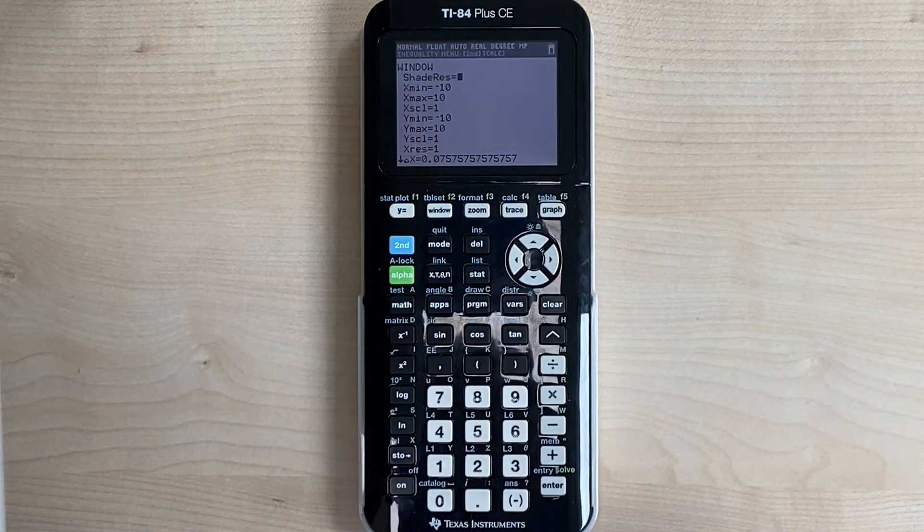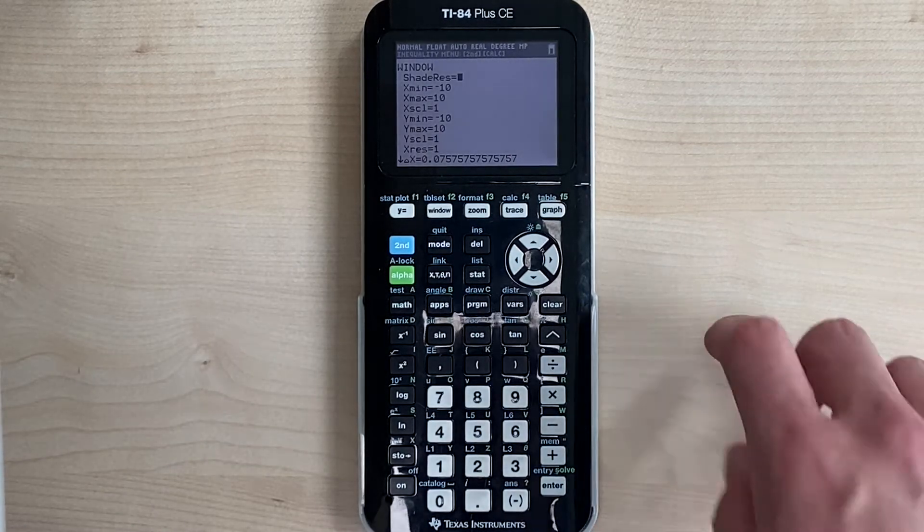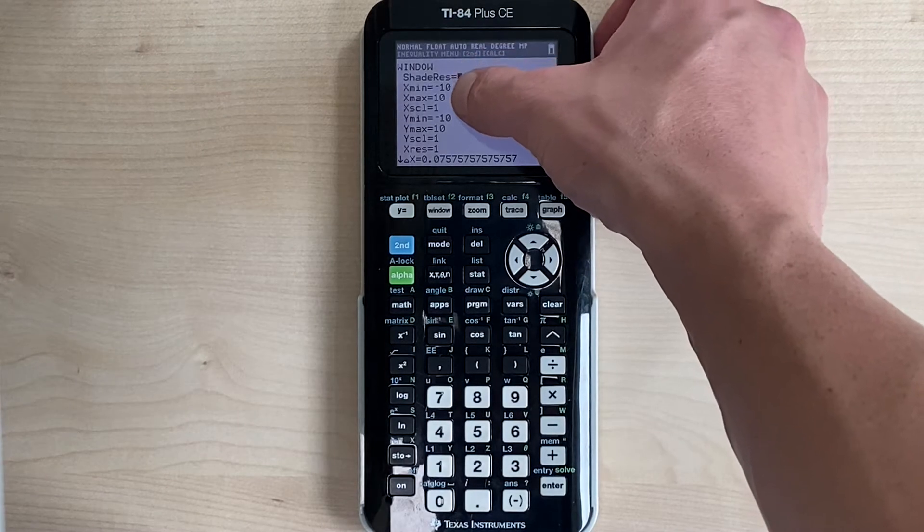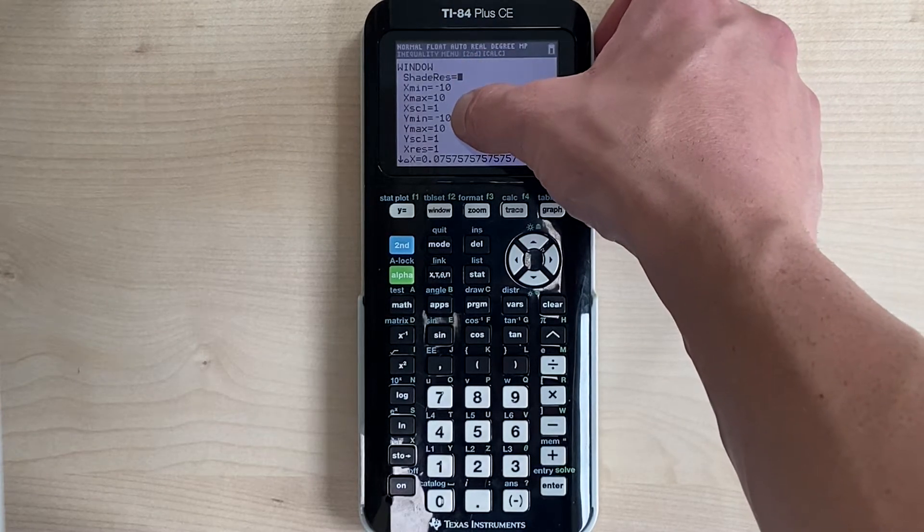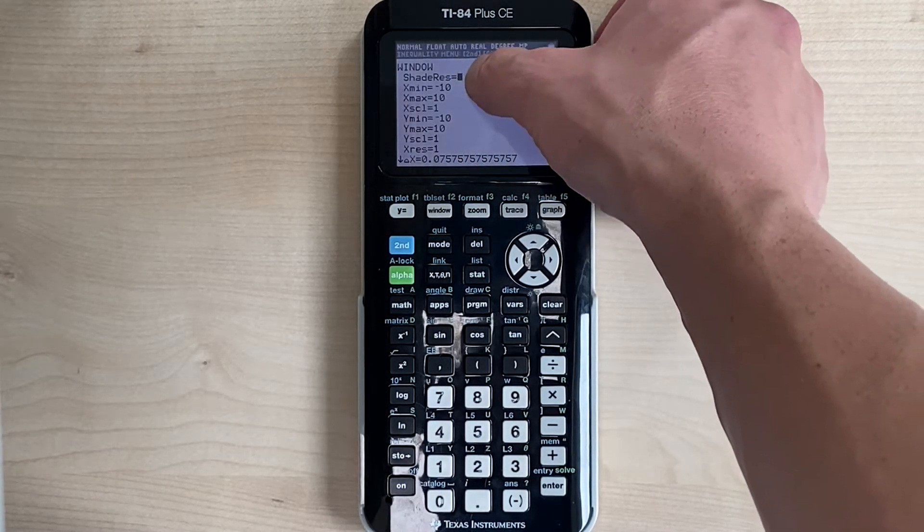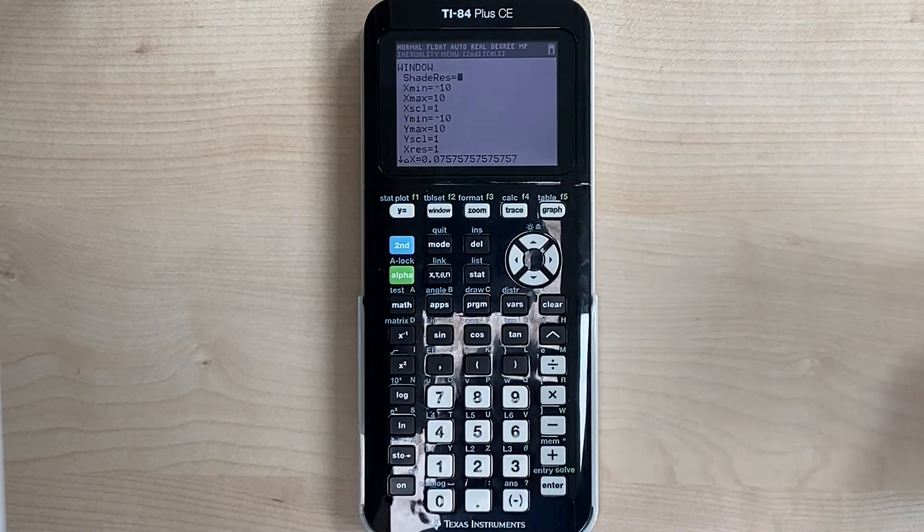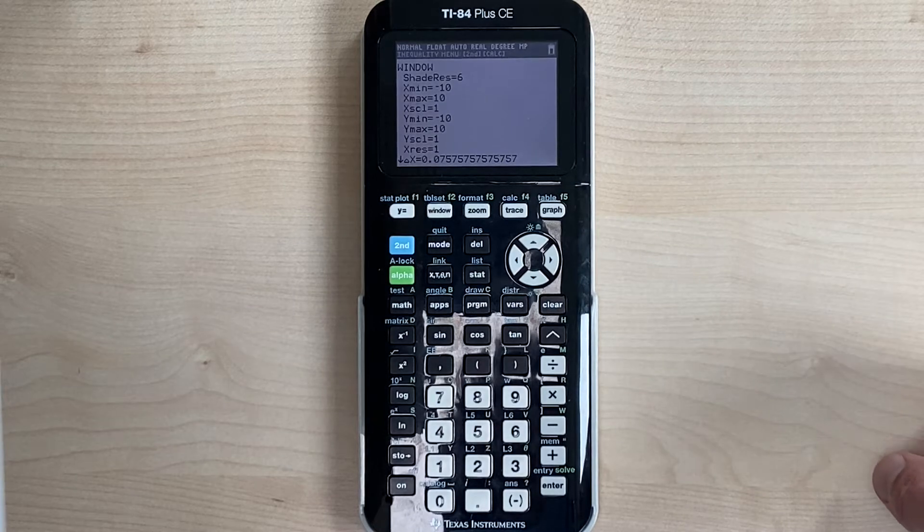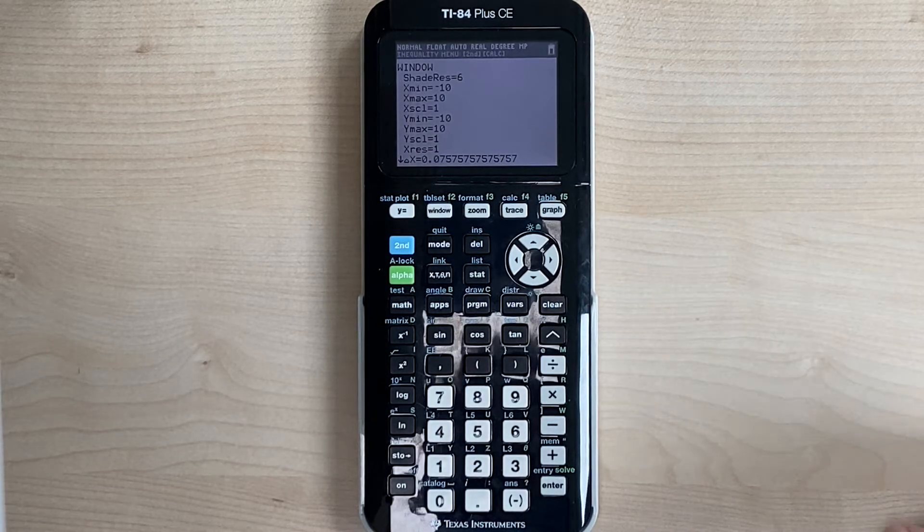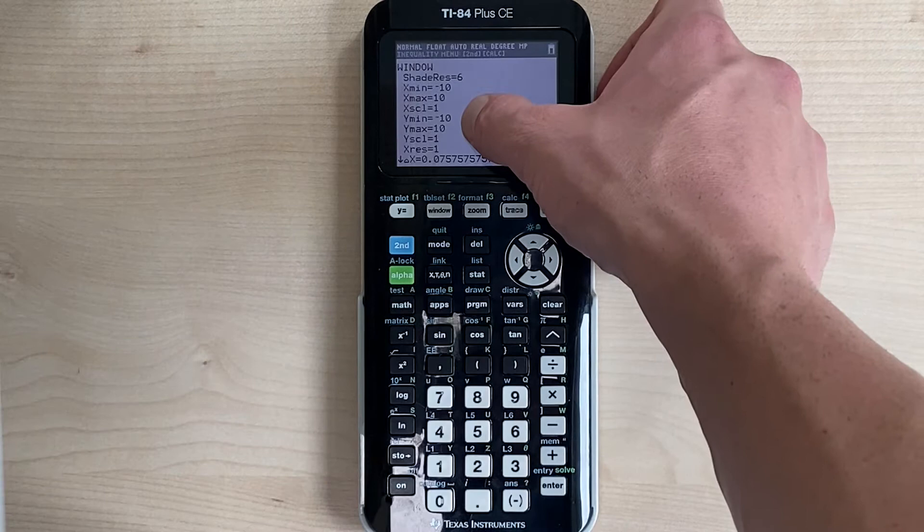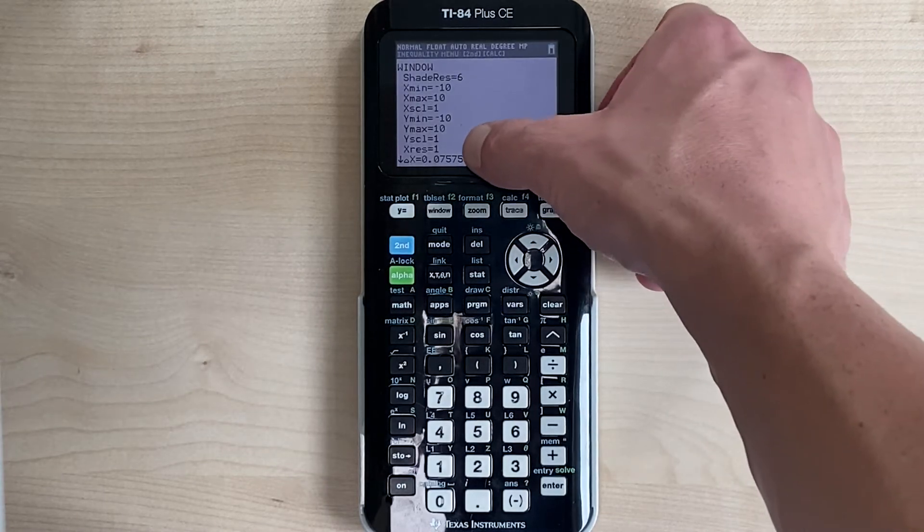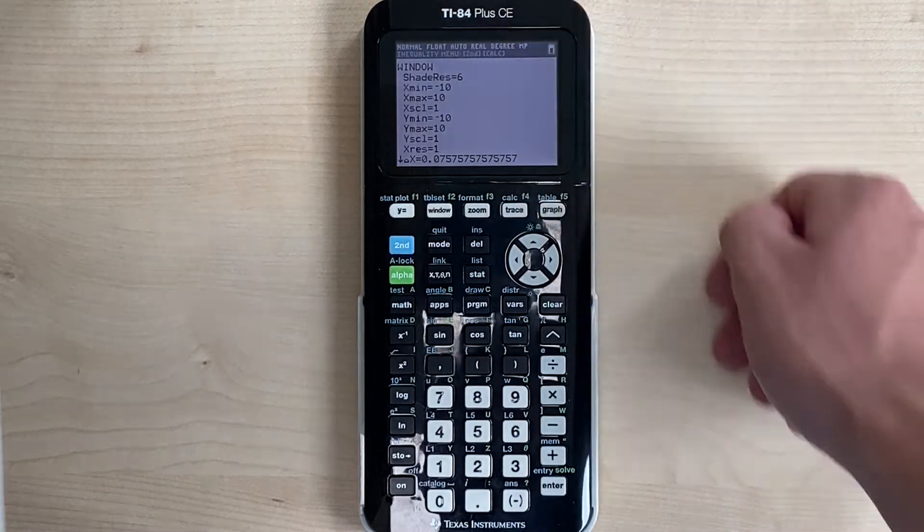The four main settings that we want to adjust are x-min, x-max, y-min, and y-max. x-min and x-max refer to the x-axis - x-min refers to how far left you want your window to show, x-max would be how far to the right. y-min would be how far down you want to see, and y-max would be how far up.